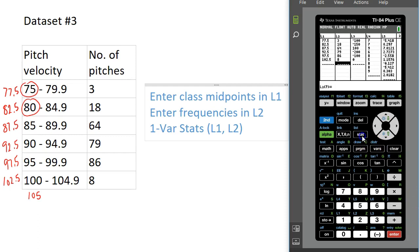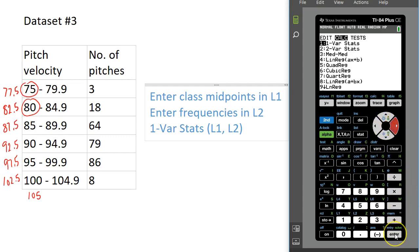I'm going to go over to Calc and do the same thing I did for the second example. My list is going to be L1, that's where I put the class midpoints. My frequency list is going to be L2, that's where I put the frequencies.